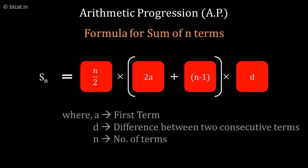Then there is a formula called SN. SN means sum to N terms. I want to add all of them. So the SN formula is N by 2 bracket 2A plus bracket N minus 1 bracket close into D. So this is the formula for sum to N terms.